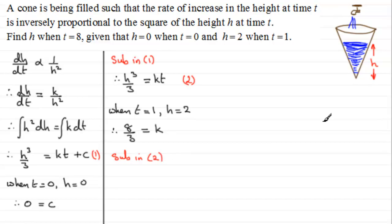That will give us our equation now, which is h cubed over 3 equals k, which we've seen is 8 thirds, and that'll be multiplied by t. If we times both sides by 3, we therefore have h cubed equals 8t.